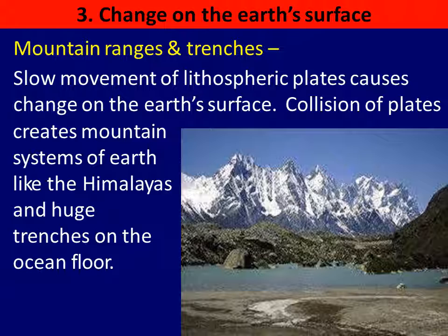Slow movement of lithospheric plates causes changes on the Earth's surface. When tectonic plates collide — meaning when two things crash into each other violently — mountains are formed, as well as trenches on the ocean floor. Trenches means very deep, steep formations. You can see the picture of the formation of mountains.